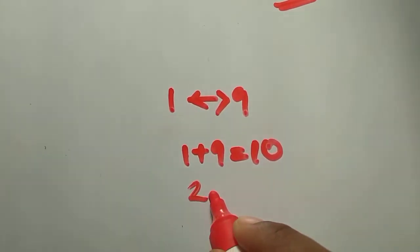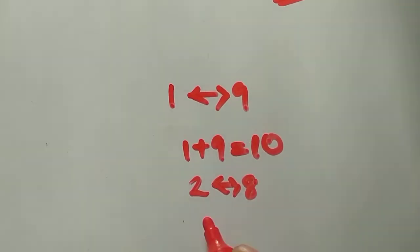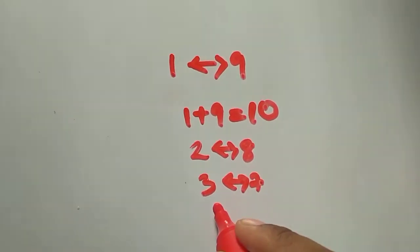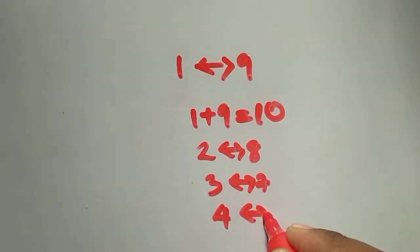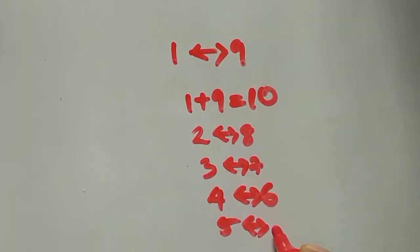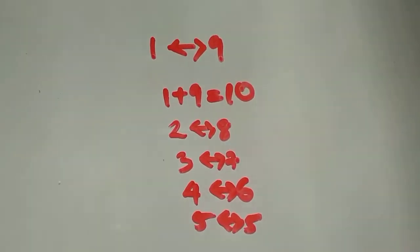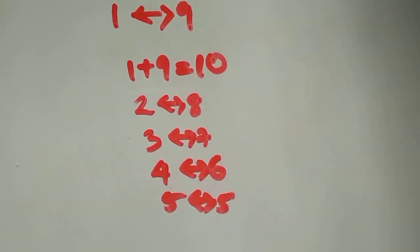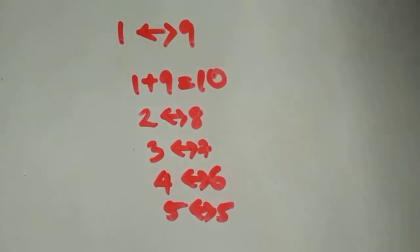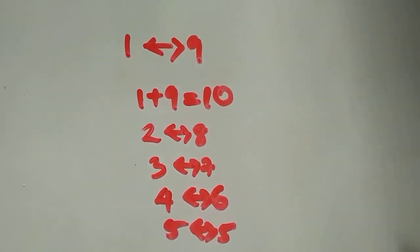Similarly, 2 and 8 are complements, 3 and 7, 4 and 6, 5 and 5 — and it goes on like that. We can also find complements for 20, 30, etc. But the most important ones are complements of 10 and 100.